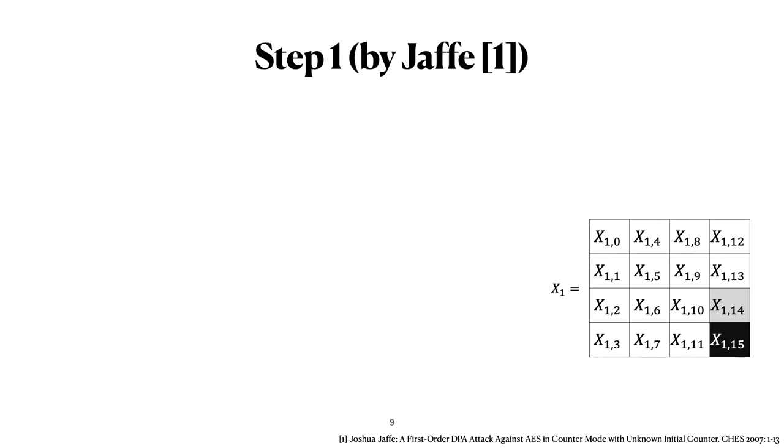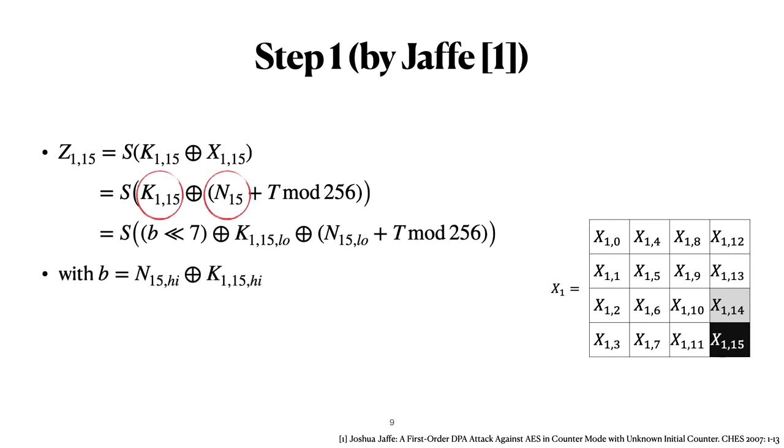Then the first step of the attack is actually identical to that from Jaffe from 2007. It targets the 15th byte after the first sub-bytes. So this is the s-box applied to the XOR of key byte 15 and state byte 15. Both of these bytes are unknown but we can use the knowledge of the counter. In this expression there are 16 bits that we don't know. 8 bits of the key byte and 8 bits of the nonce byte. And then Jaffe did an optimization to reduce the number of unknown bits to 15 by combining the most significant bits of the nonce and key bytes in a bit B. So that means that there are 15 bits unknown, bit B, and the 7 lower bits of the key byte and the nonce byte. Which means that we can do DPA with 2 to the power 15 hypothesis.